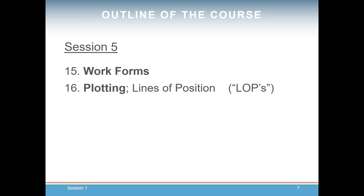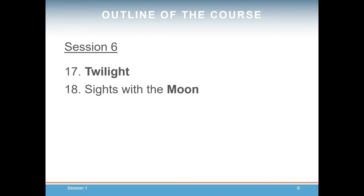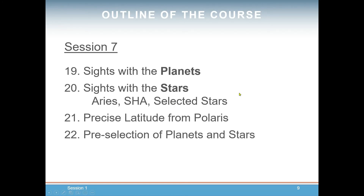Finally, the end result is that we will plot a line of position for each sight, and using those lines of position we'll be able to locate ourselves. We'll then discuss twilight, which is important if you're going to be sighting for stars, planets, or the moon. We'll discuss how to take a sight with the moon, and same with planets. We'll do a session on stars, talking about Aries and something called SHA or sidereal hour angle, and selected stars. We'll then cover how to get a precise latitude from Polaris, as opposed to an approximate one, and how to pre-select which planets and stars you might want to shoot during twilight for your position.